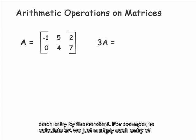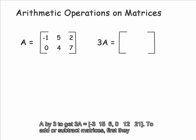For example, to calculate 3A, we just multiply each entry of A by 3 to get 3A equals in row 1: negative 3, 15, 6, and in row 2: 0, 12, 21.